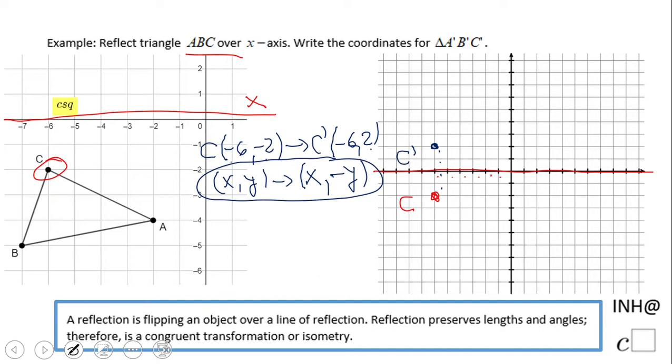Point A, which is (-2, -4), becomes what? Negative two stays, and negative four becomes positive four.